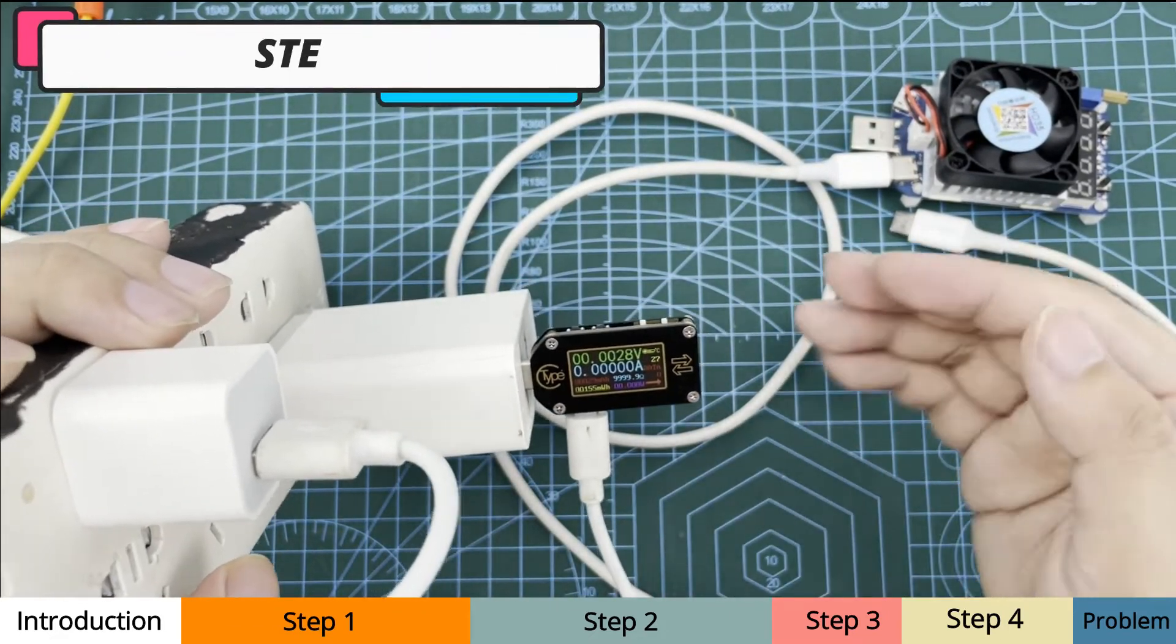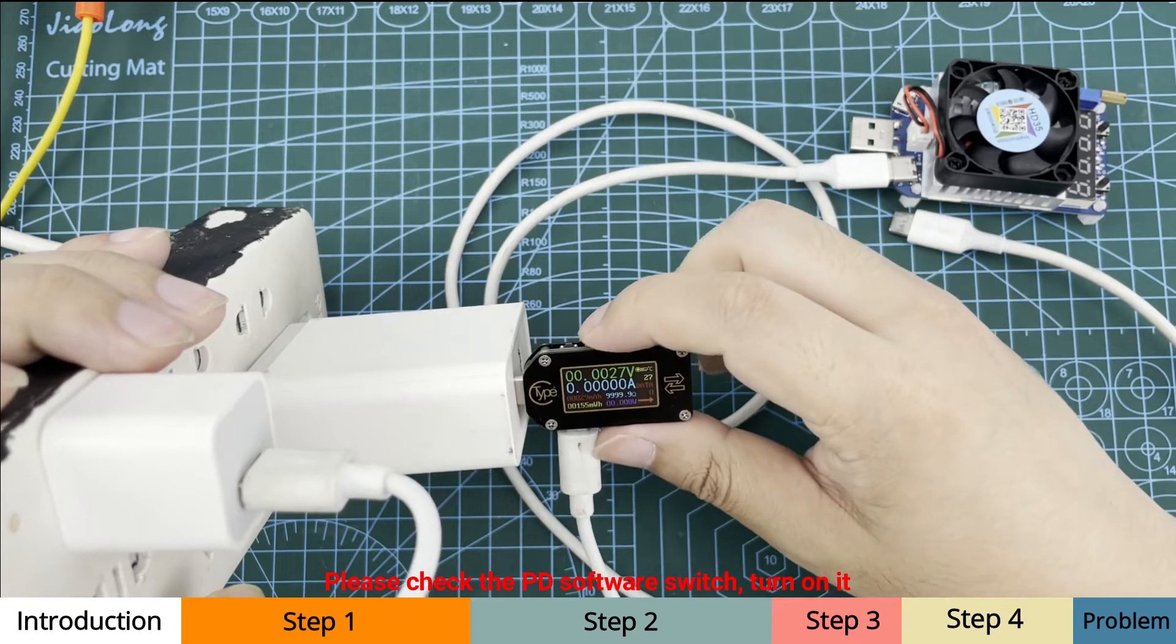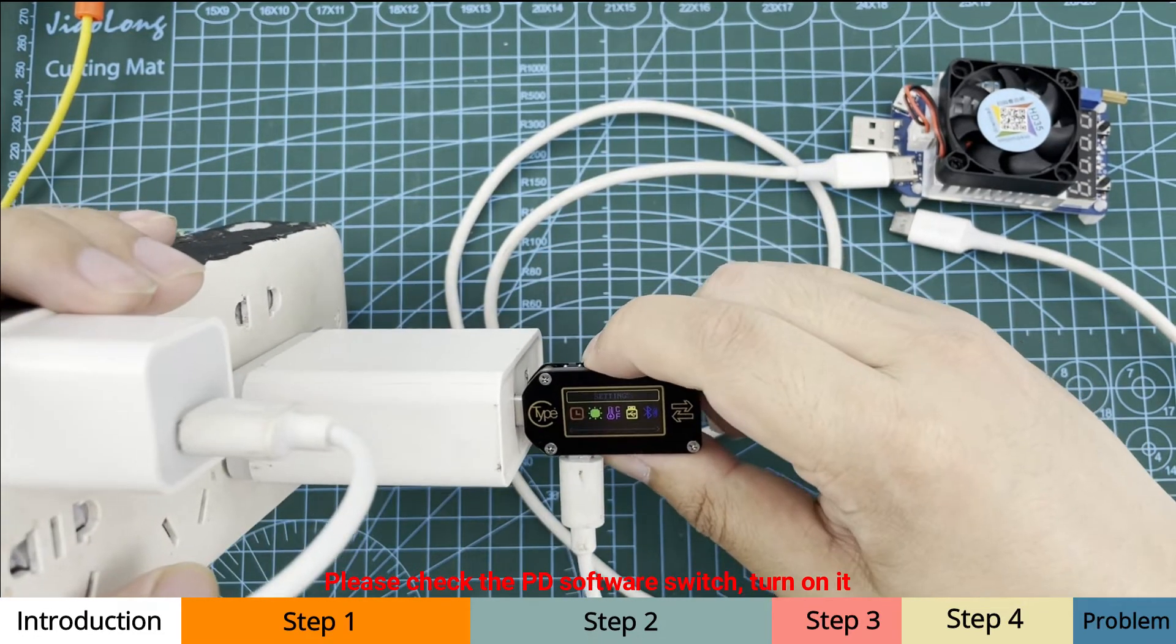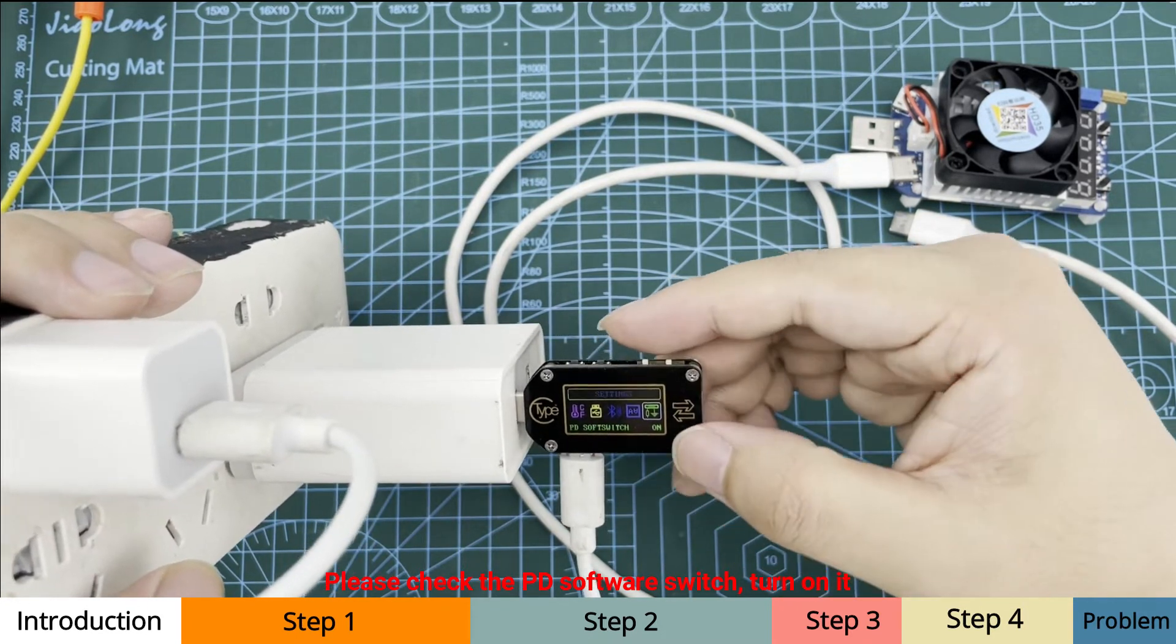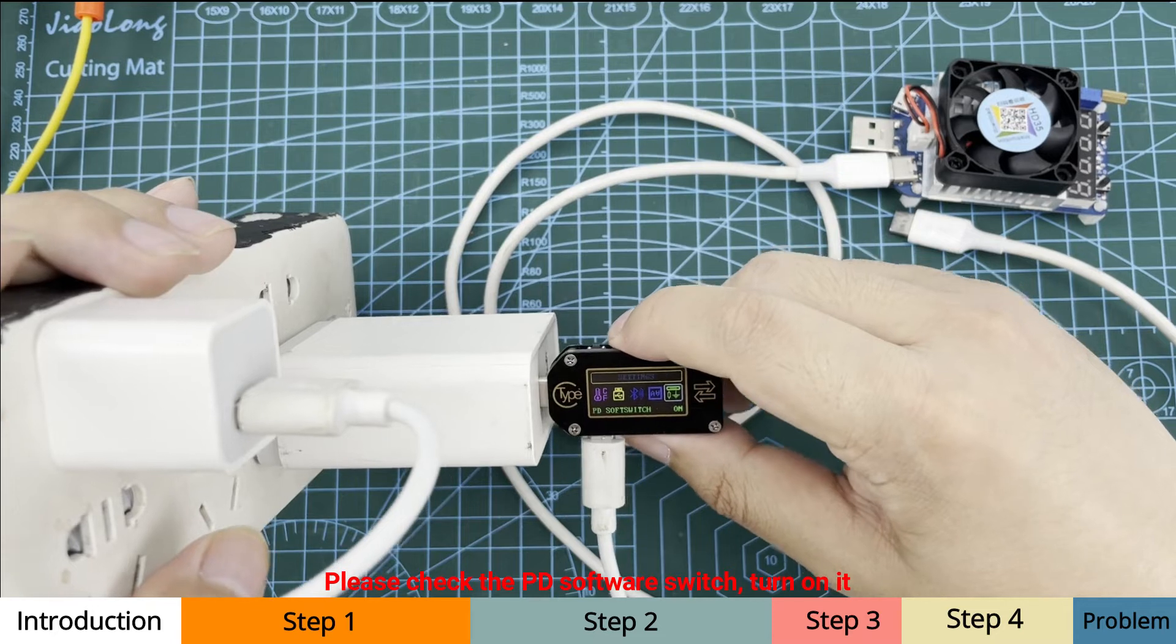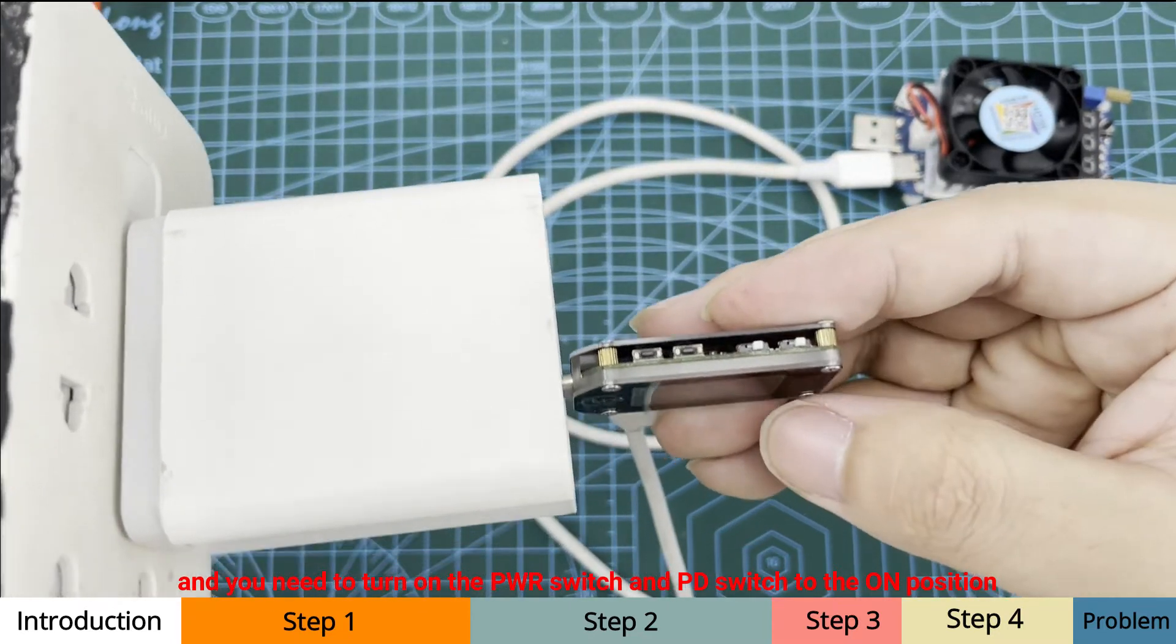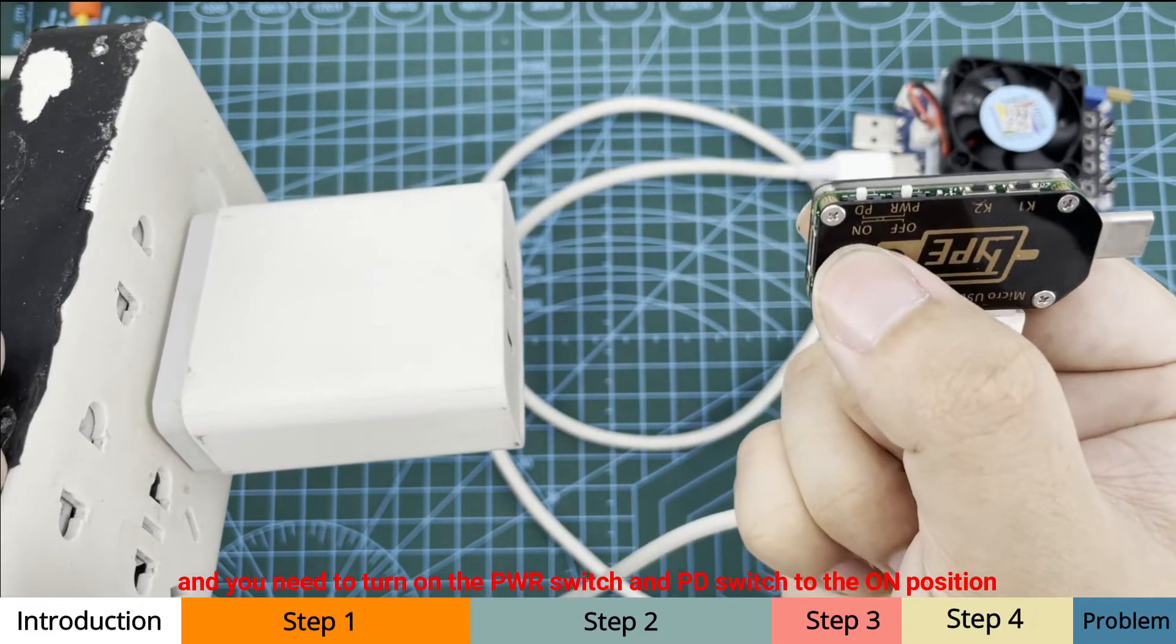Step 2, please check the PD switch, software switch. Go to the setting page and check if the PD software switch is on. If it is on, you can exit this menu and turn on the PD switch, turn on the power switch. Put both of the switches to the on position.